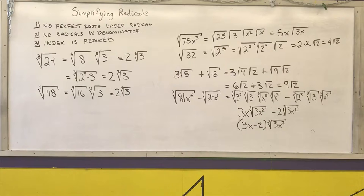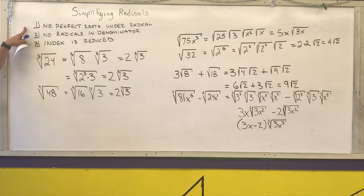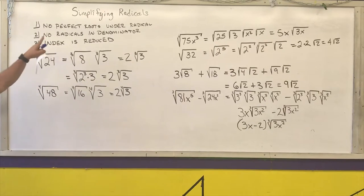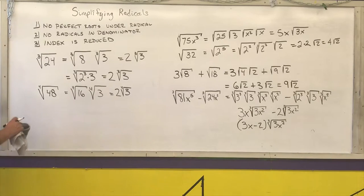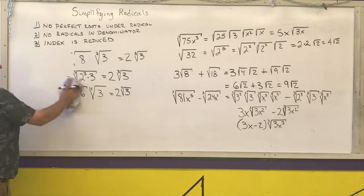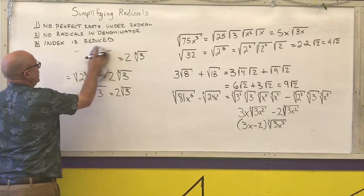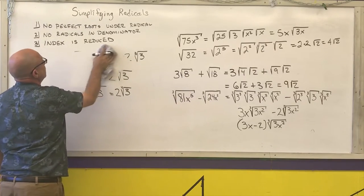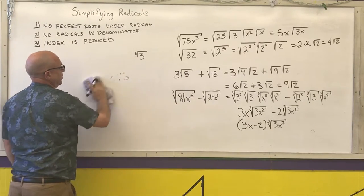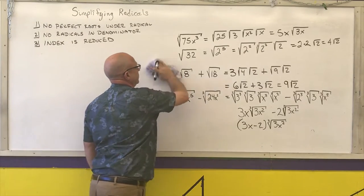You're going to work each step one at a time trying to get things that you can combine as like terms. So we've covered no perfect roots underneath radical symbols — all of those examples were pulling perfect roots out. Now I'm going to talk about no radicals in the denominators of fractions.